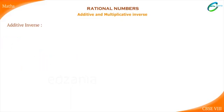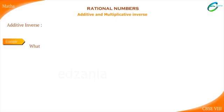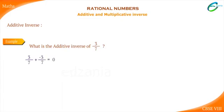Similarly, if we consider any rational number, say a upon b, then the additive inverse of a upon b will be minus a upon b, as a upon b plus minus a upon b is equal to zero. Example: what is the additive inverse of 3 upon 7? As 3 upon 7 plus minus 3 upon 7 is equal to zero, the additive inverse of 3 upon 7 is minus 3 upon 7.